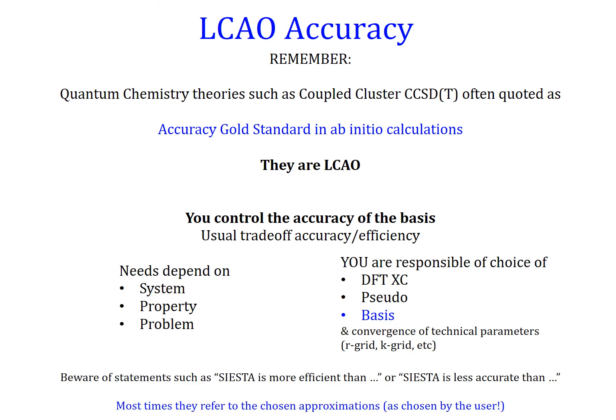The needs depend very much on the system, the property you are after, and the problem you want to solve. You are responsible for choosing the appropriate exchange-correlation density functional, pseudopotentials, and basis set, in addition to the technical parameters you need to converge. Please beware of statements in the community about SIESTA being more or less efficient or accurate than other codes — those statements typically depend on the approximations, not the method. In principle SIESTA allows calculations ranging from very efficient to very accurate.